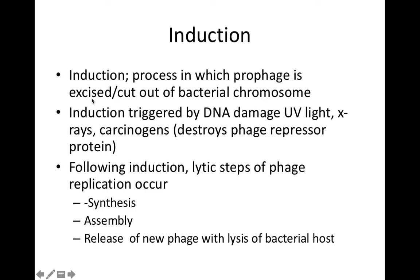Induction is the process in which the prophage is excised — cuts itself out of the bacterial chromosome. What will trigger induction is anything that causes DNA damage, such as UV light, X-rays, or carcinogens. The reason DNA damage triggers induction is that the DNA repair enzymes and repair proteins, almost by mistake, end up destroying the phage repressor protein which has kept the phage in the lysogenic cycle. It's that phage repressor protein that ensures the prophage stays in the bacterial chromosome. So with DNA damage, the phage repressor protein is destroyed, and now the lytic cycle genes can be expressed, and we get a switch from the lysogenic cycle into the lytic cycle.